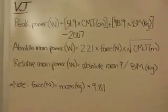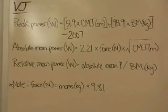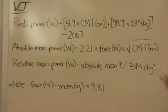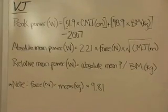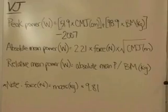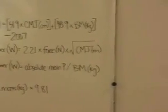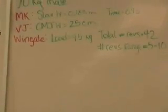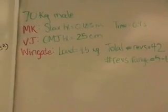Relative mean power, when you're calculating relative anything, it's just dividing the absolute by the individual's body mass in kilograms. So, if we go back to our 70 kilogram man, who happens to have a vertical jump height of 25 centimeters,